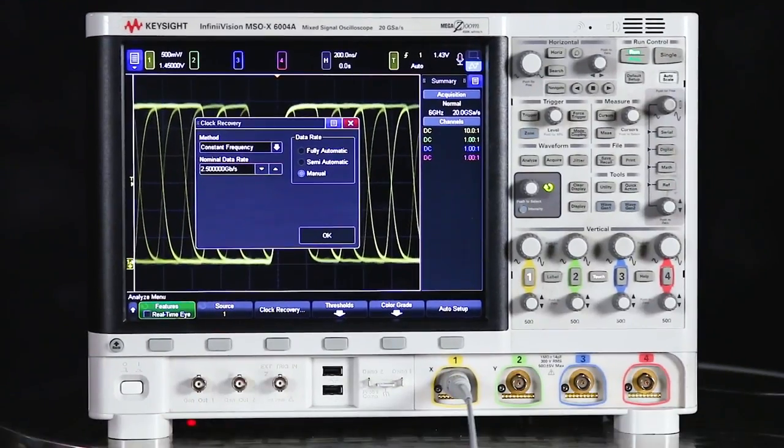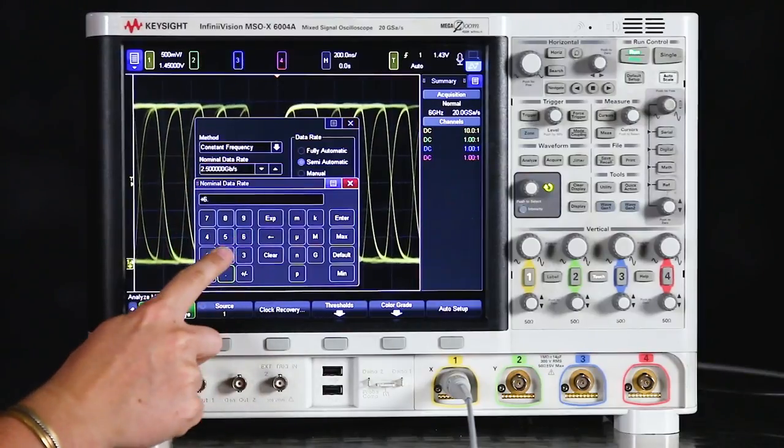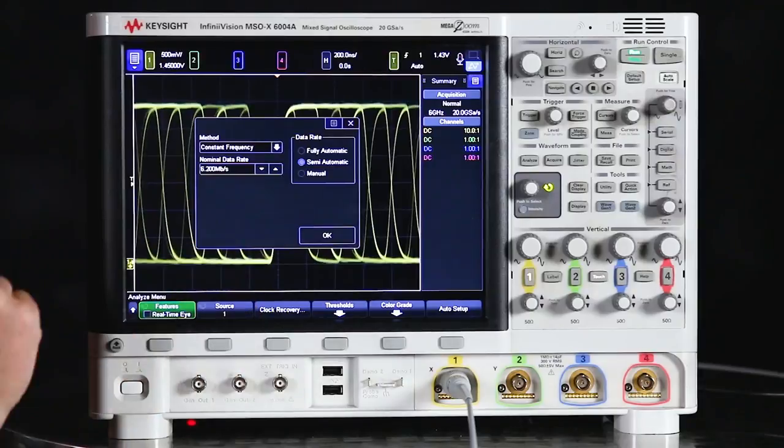So since we have a rough estimate of what the bitrate of the signal is, we want to use the semi-automatic option. So the scope will use that bitrate that we found in order to calculate the exact ideal bitrate of the signal. So in the nominal data rate box we want to plug in that 6.2 megabit bitrate that we just measured.